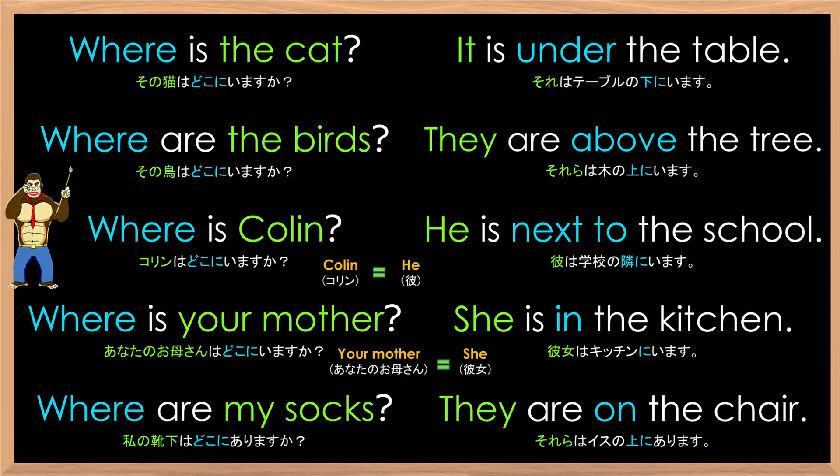Let's try that at a normal speed. Where is the cat? It is under the table. Where are the birds? They are above the tree. Where is Colin? He is next to the school. Where is your mother? She is in the kitchen. Where are my socks? They are on the chair.